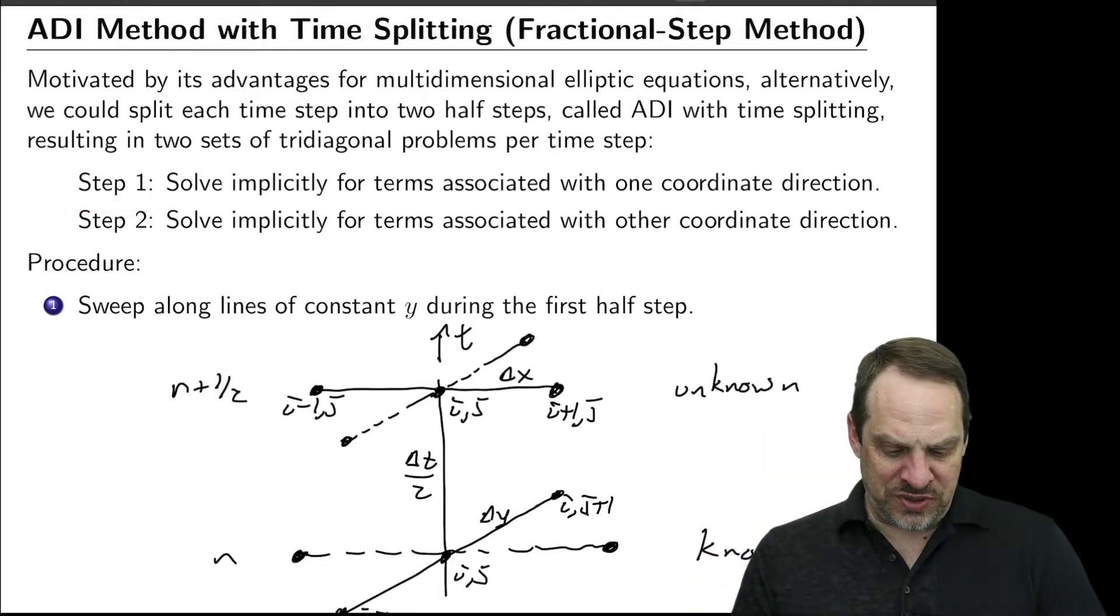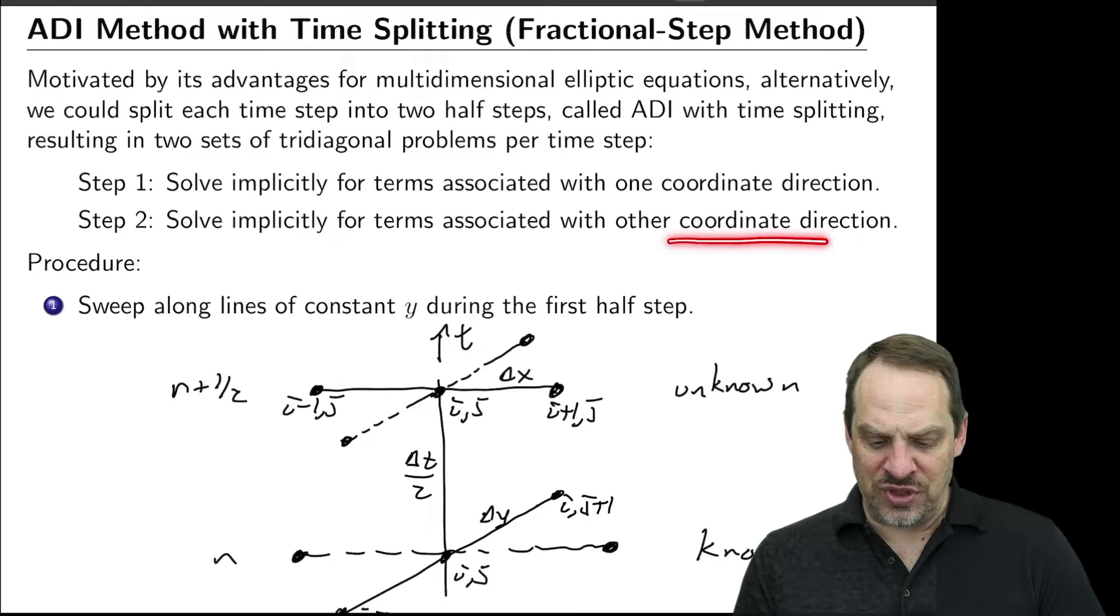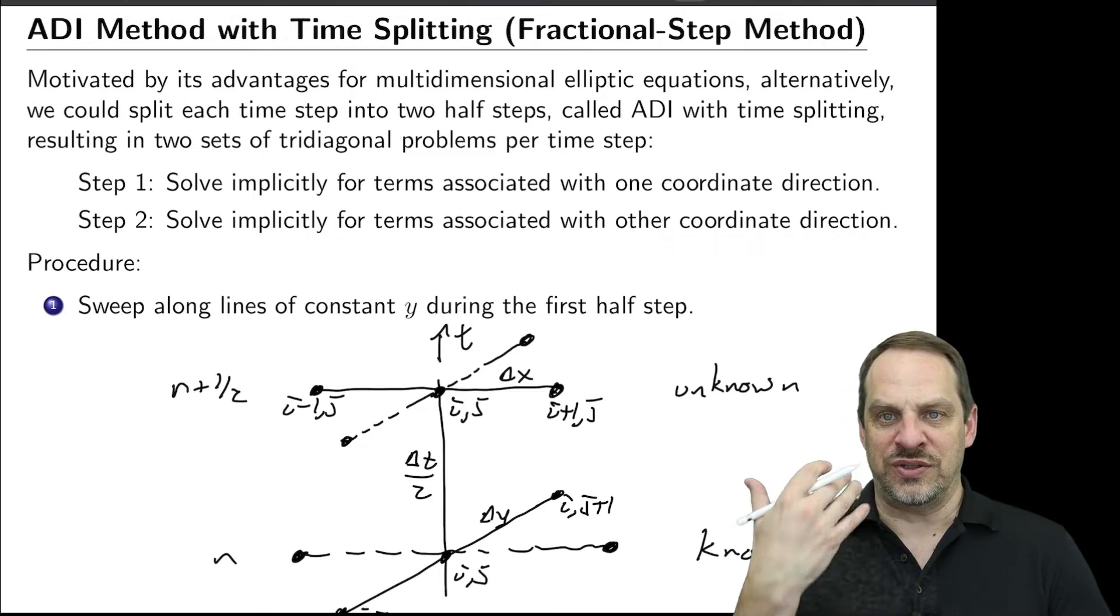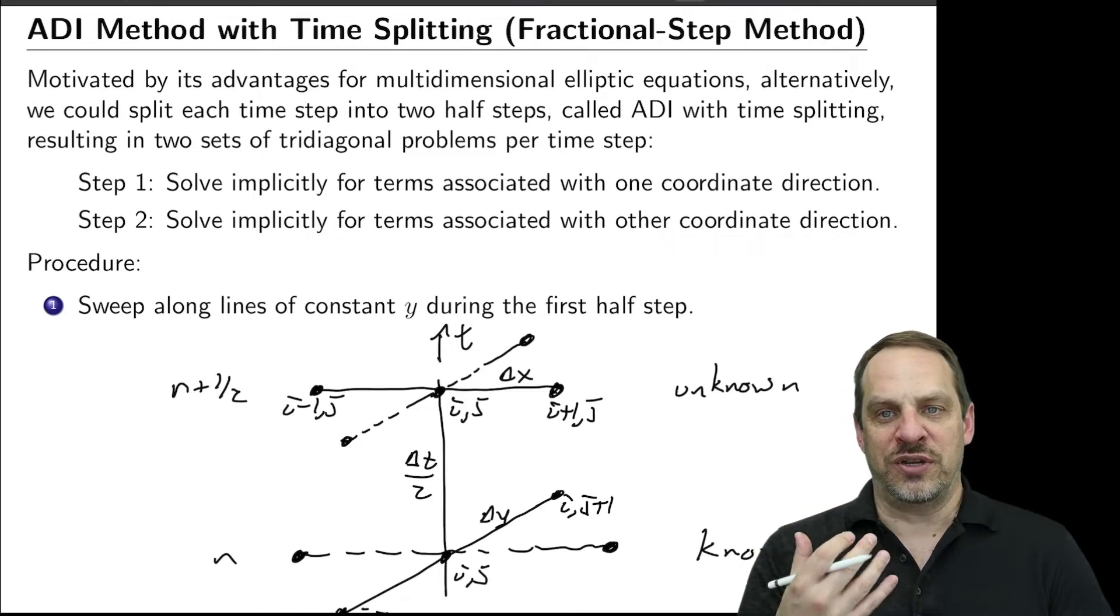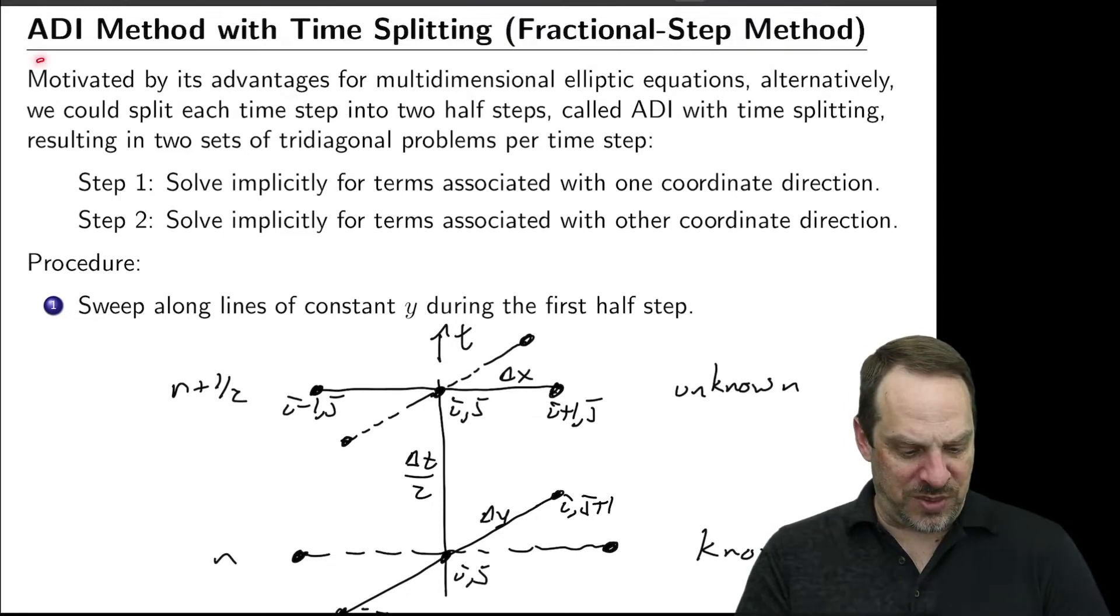In the first step, we would solve implicitly for the terms associated with one of the coordinate directions. And in step two, we would solve implicitly for the terms associated with the other coordinate direction. And again, that sounds very similar to the alternating direction implicit method, which is why I prefer the name ADI with time splitting.